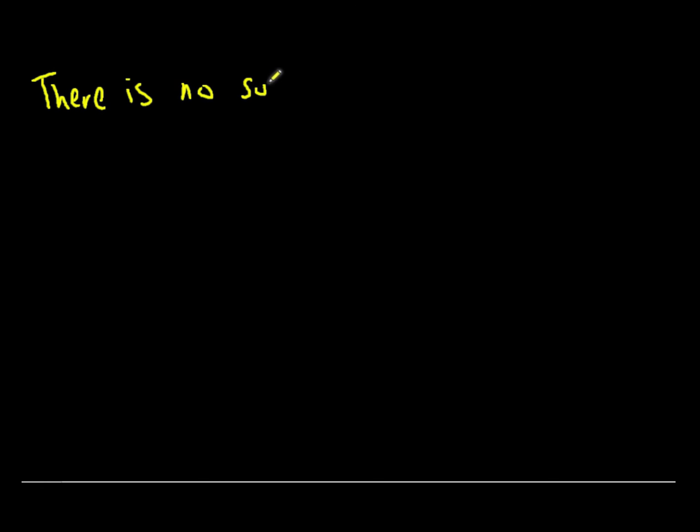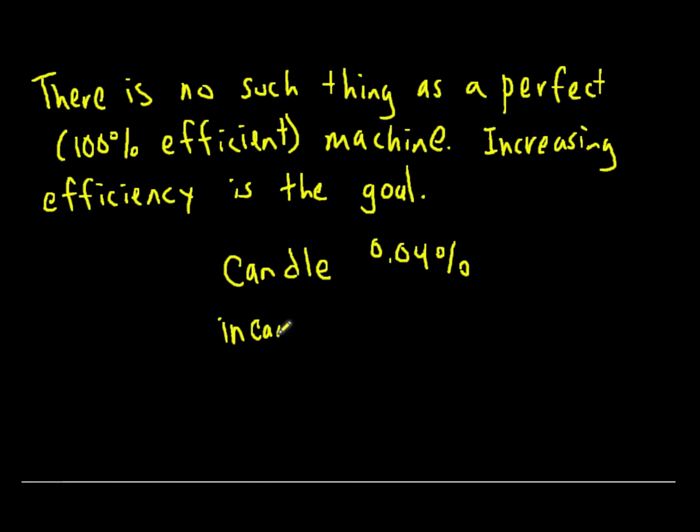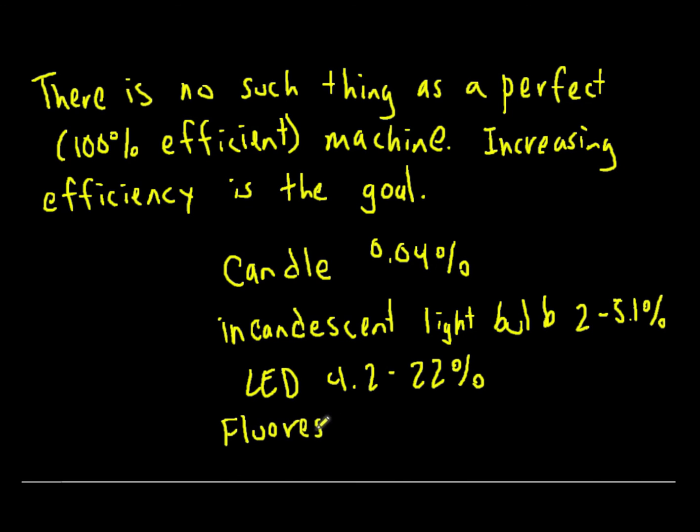There is no such thing as a perfect or 100% efficient machine. The goal when we're creating newer machines and new technology is always to increase efficiency. The higher the efficiency is the better the machine is at using its input to produce its goal. For example, old school technology the candle had an efficiency of 0.04%. The incandescent light bulb was still quite inefficient but it was better than a candle. It was 2 to 5% efficient. The LED lights are 4.2 to 22% efficient which is much better. And the new fluorescent light bulbs range from 9% to 15% efficiency.